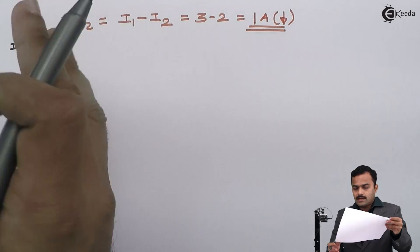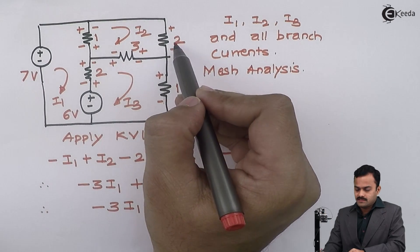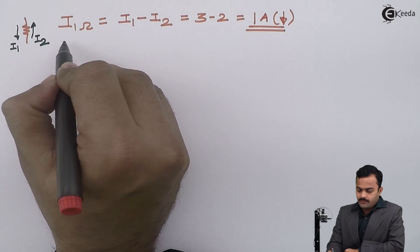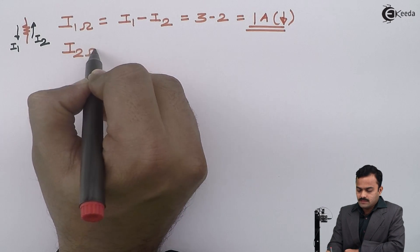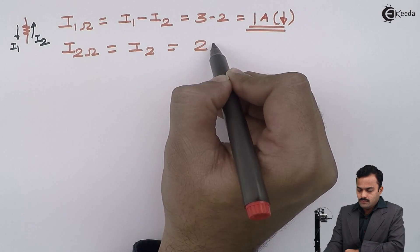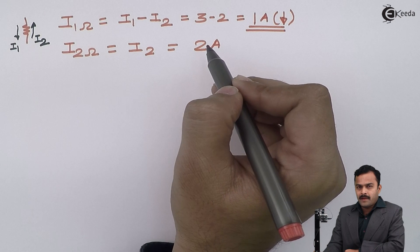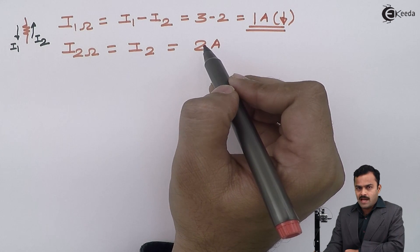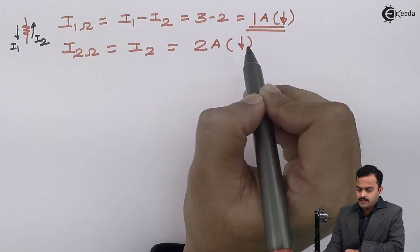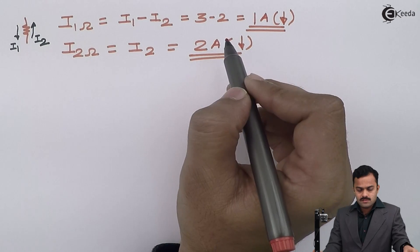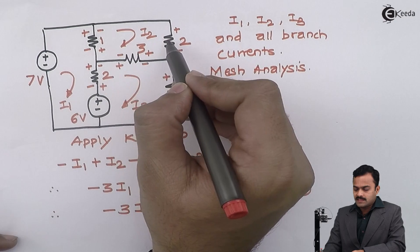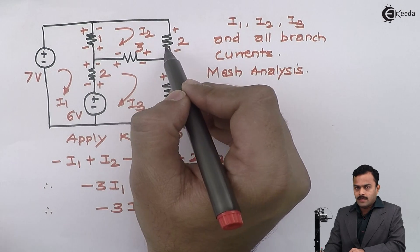For the 2Ω resistance, only i2 is flowing through it, so the branch current equals i2 = 2 amperes. A positive answer confirms the assumed current direction is correct. This 2-ampere current flows in the downward direction, since this loop current is the branch current for this resistor.